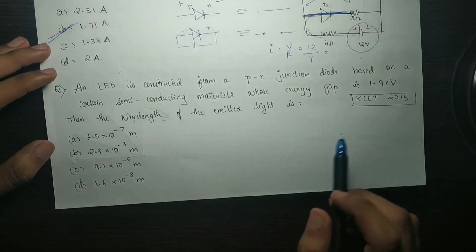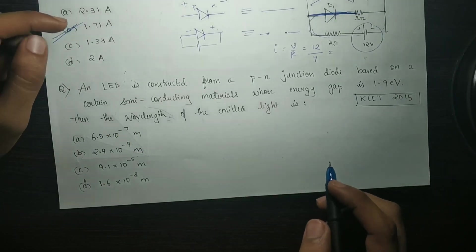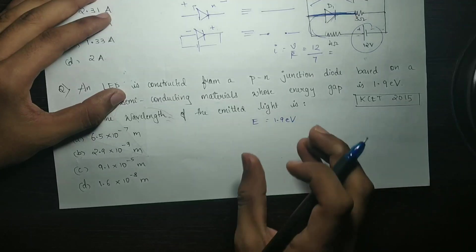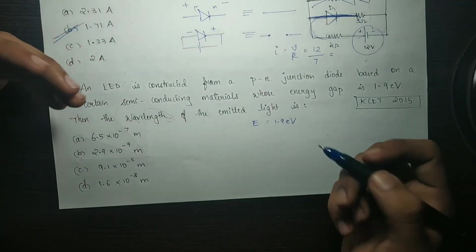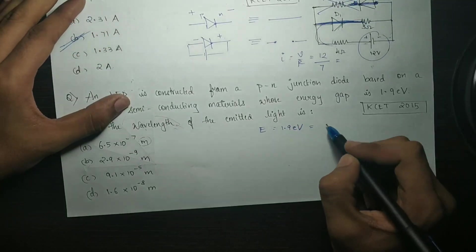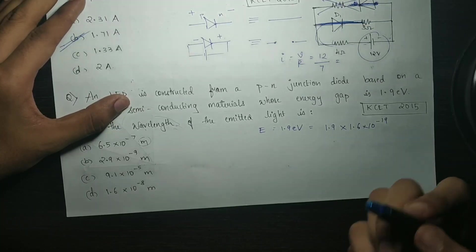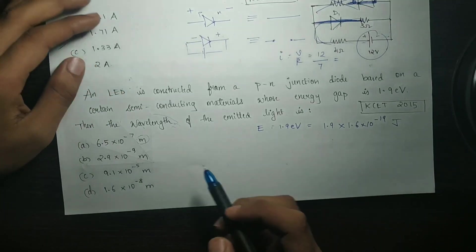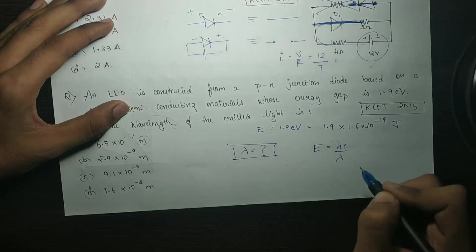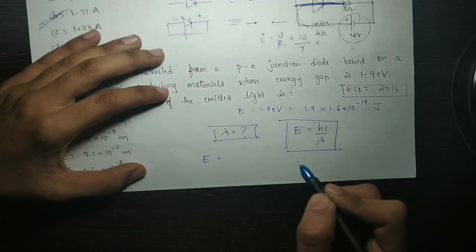Last question: an LED is constructed from a PN junction diode based on semiconducting materials whose energy gap is 1.9 electron volts. What is the wavelength of the emitted light? The energy gap is 1.9 eV. We use the formula E equals hc by lambda, so lambda equals hc by E.